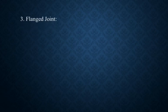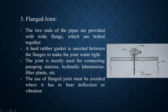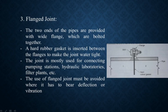Number 3 — flanged joint, which is again a very easy type of joint. The two ends of pipes are provided with wide flanges which are bolted together. Both pipes are provided flanges at their ends, and when we connect them, we align both flanges and bolt them together.